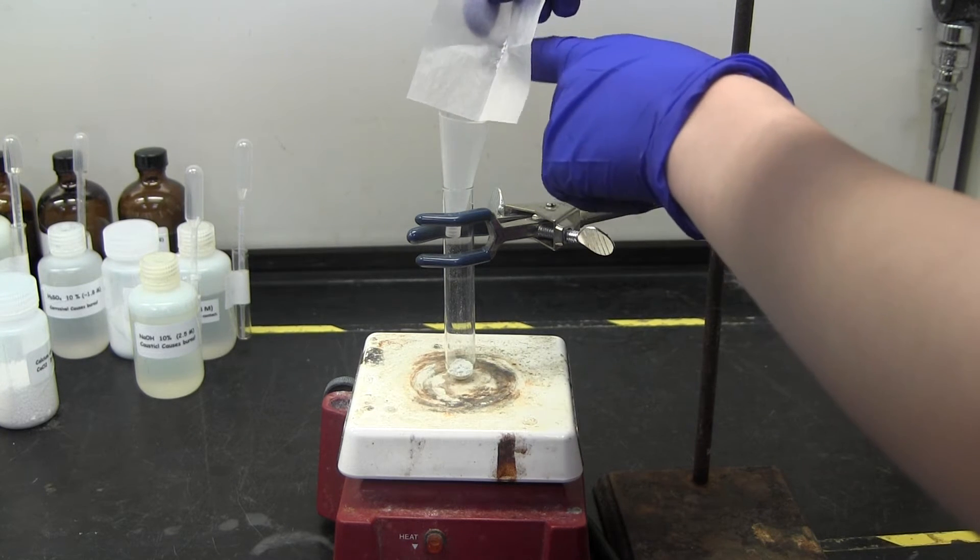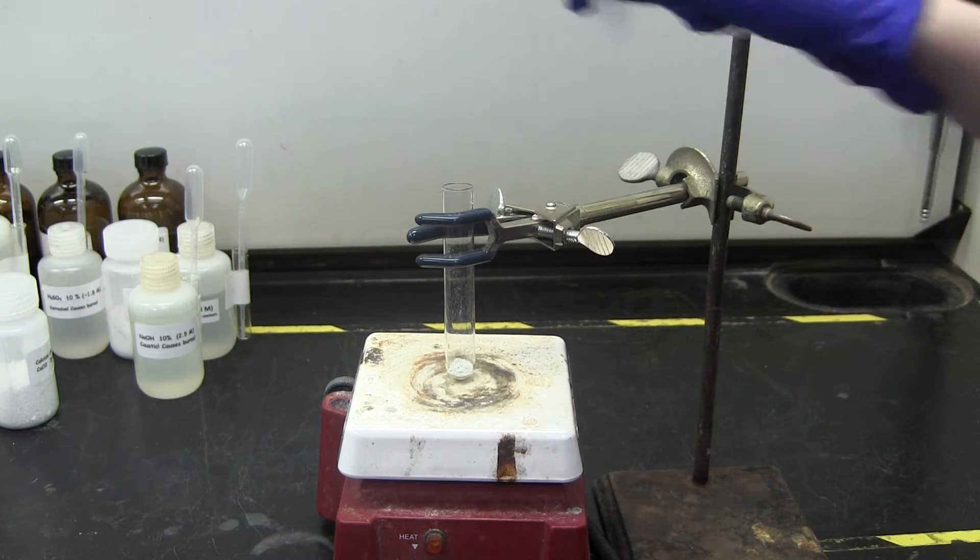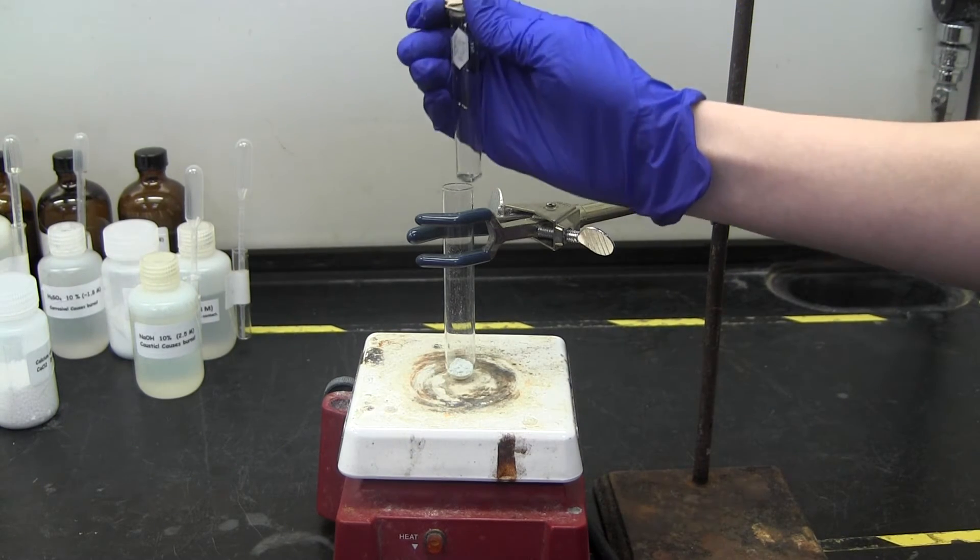To start the purification, you will put your unknown in the large test tube. You will then fit the small test tube inside the large one with the same placement as before.